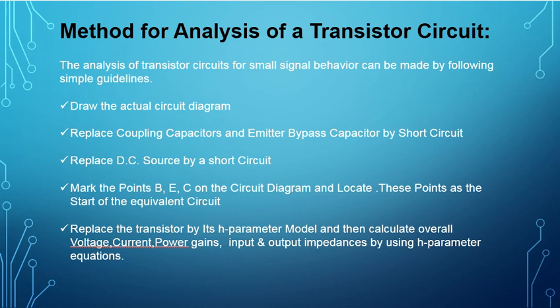The DC biasing is required to keep your transistor in the desired region, but in the AC analysis portion that DC source has to be short-circuited — directly connected to ground. Next, we have to indicate the points like base, emitter, and collector on the circuit diagram and locate these as the start of the equivalent circuit. Then replace your transistor by its H parameter model — small signal low frequency or high frequency. Then we calculate voltage gain, current gain, power gain, and input and output impedances. The main understanding of this analysis is how much gain that amplifier is producing.